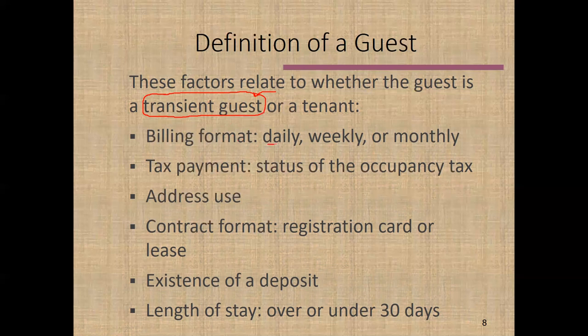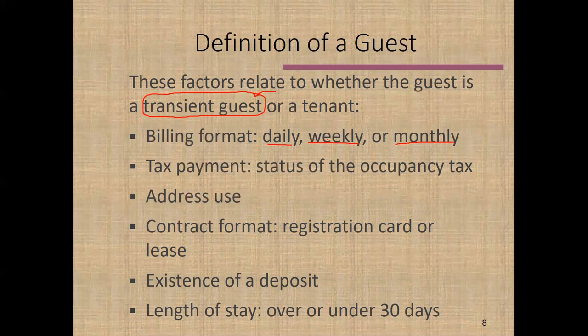One factor to consider is how the person is being billed — on a daily, weekly, or monthly basis. If they stay 12 days and are billed daily, they pay for 12 days. You might prefer monthly billing because you're likely to get more money, but the daily basis is more protective for you in terms of maintaining transient guest status.